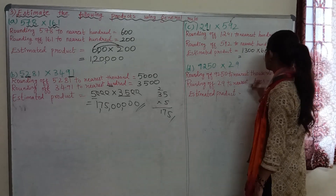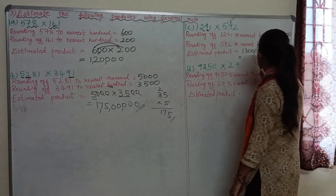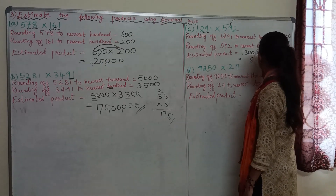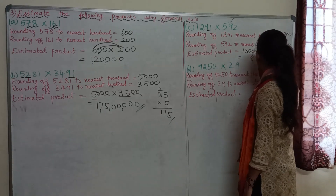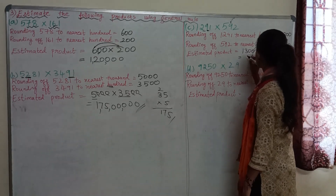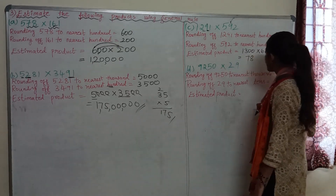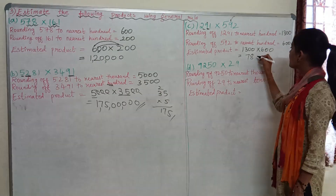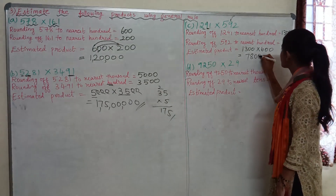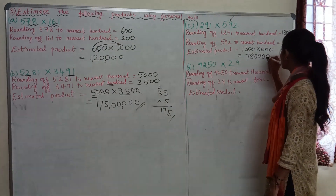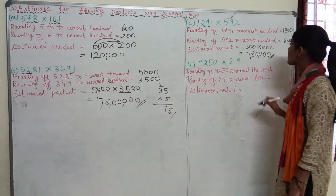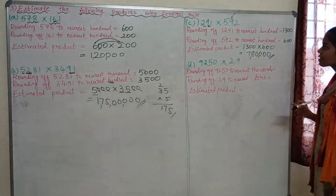So 1,300 × 600: we compute 13 × 6, which is 78, then add the zeros. This gives us 7,80,000 as the estimated product.